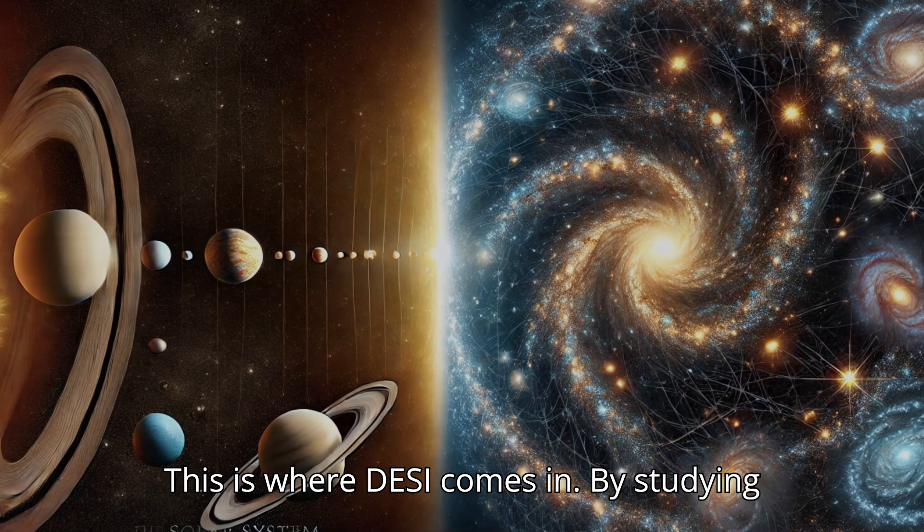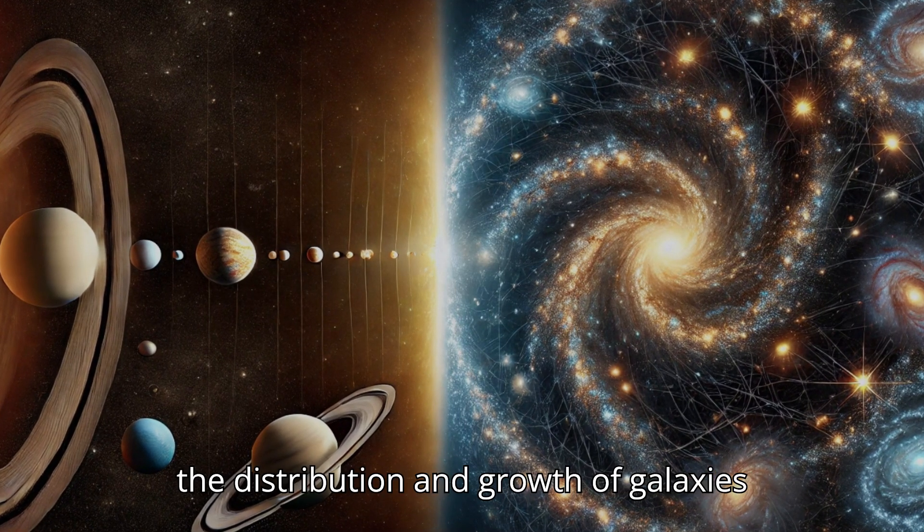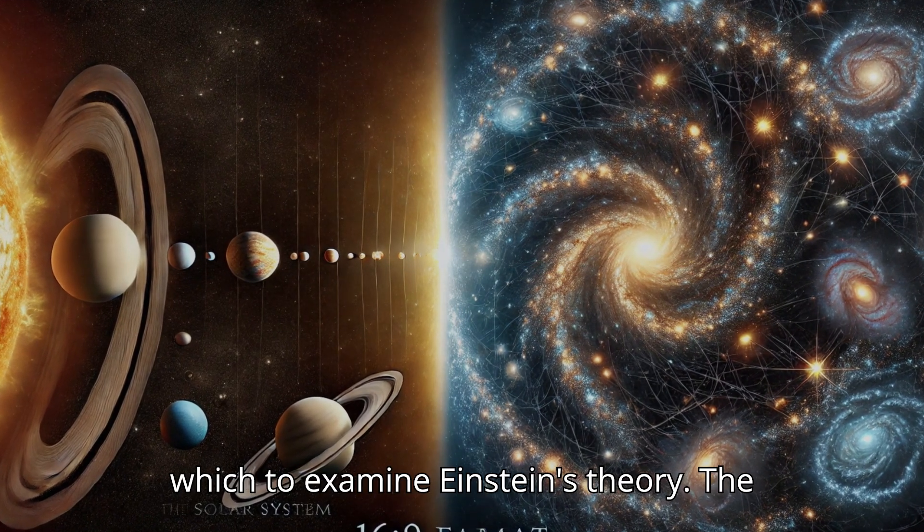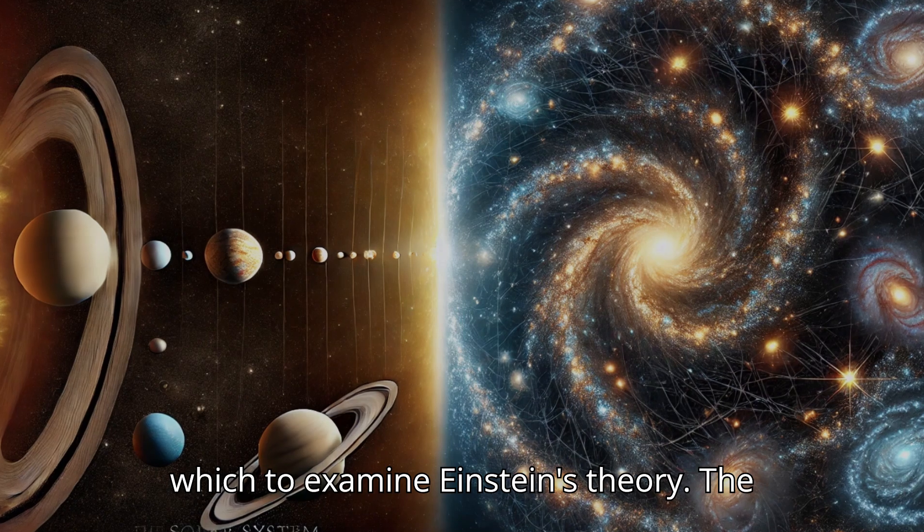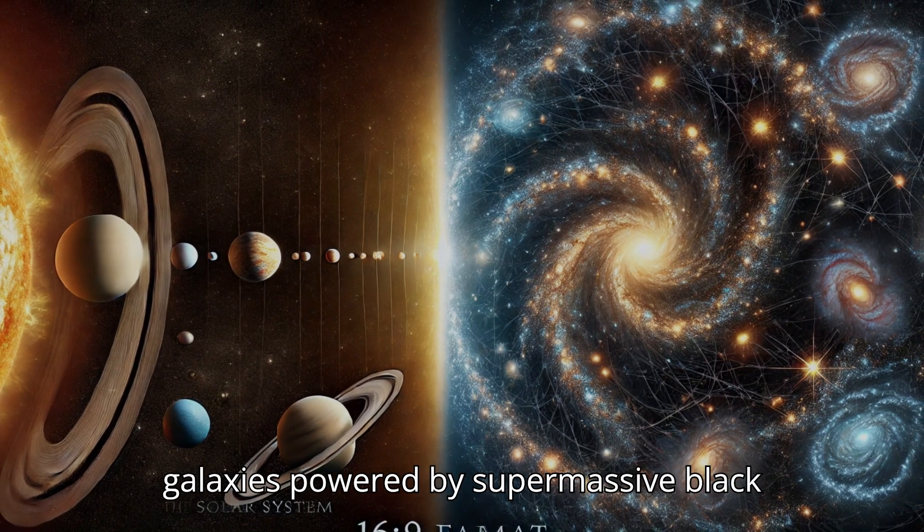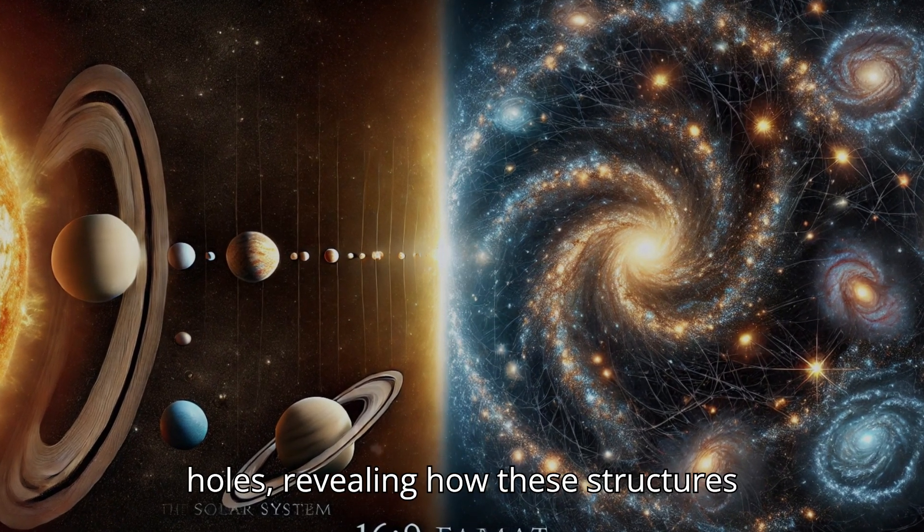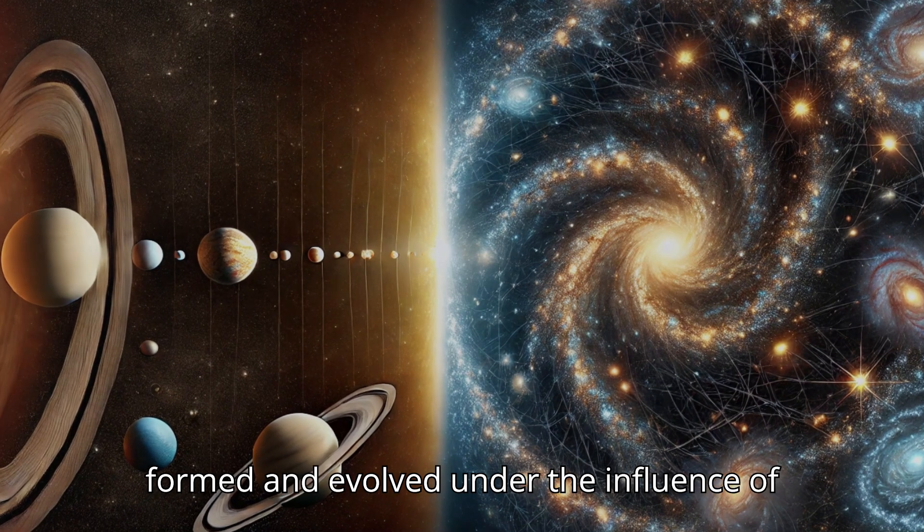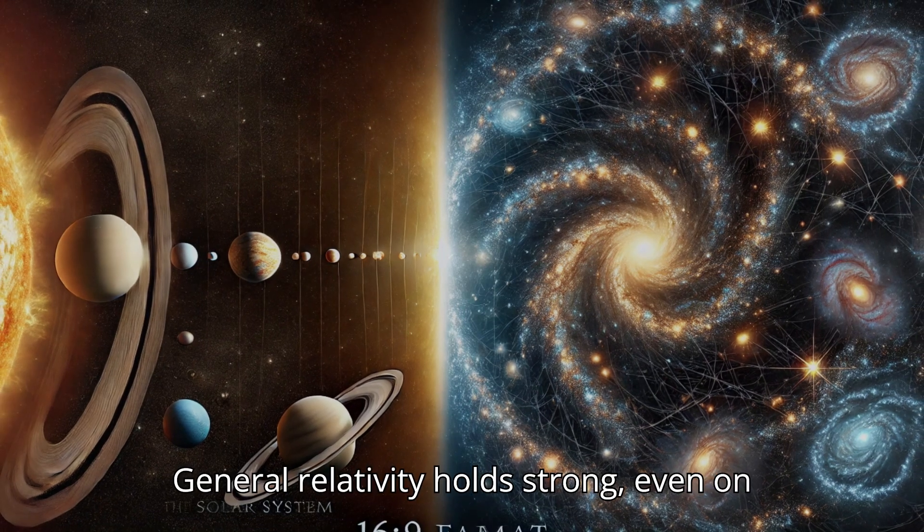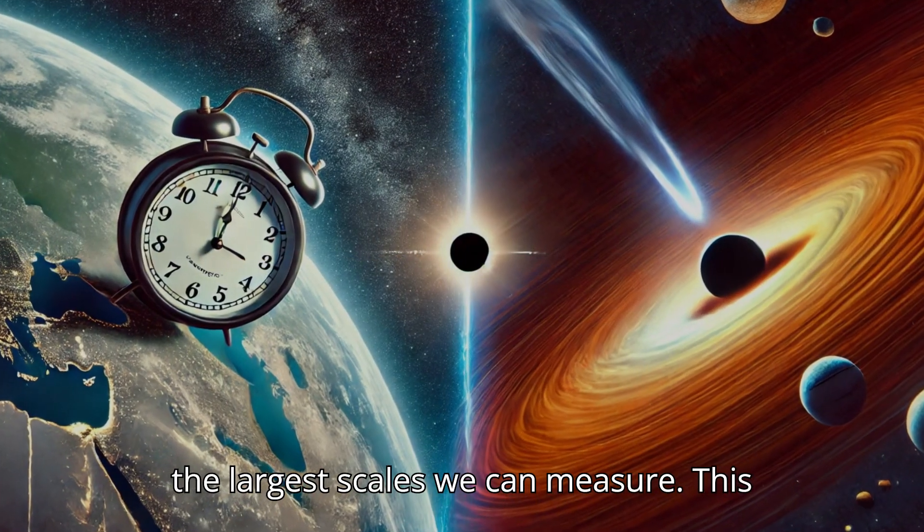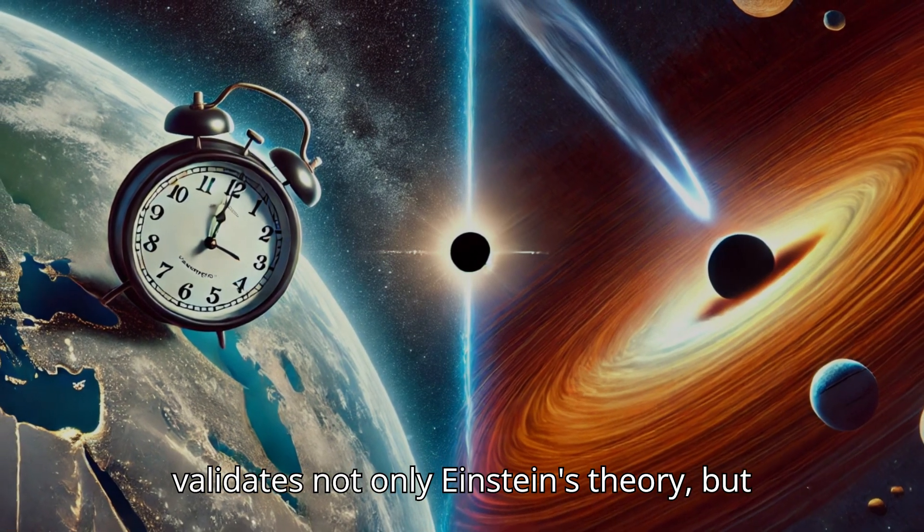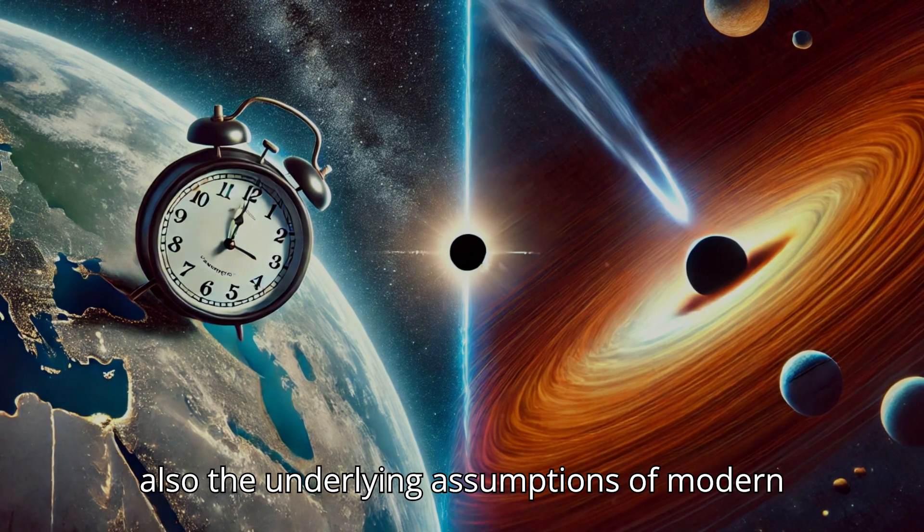This is where DESI comes in. By studying the distribution and growth of galaxies across 11 billion years of cosmic history, DESI offers a new lens through which to examine Einstein's theory. The instrument has observed nearly six million galaxies and quasars, bright cores of galaxies powered by supermassive black holes, revealing how these structures formed and evolved under the influence of gravity. The results? General relativity holds strong, even on the largest scales we can measure. This is a significant milestone, as it validates not only Einstein's theory but also the underlying assumptions of modern cosmology.